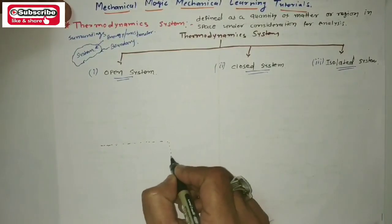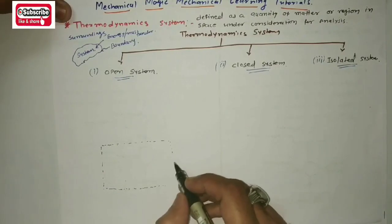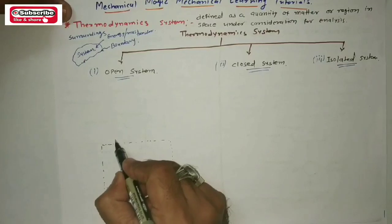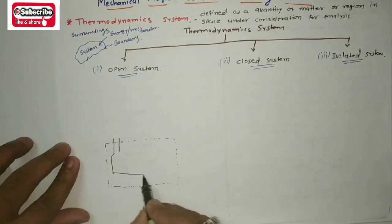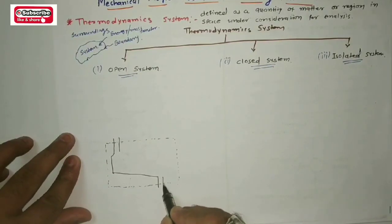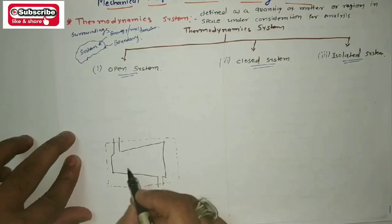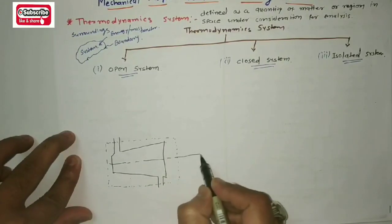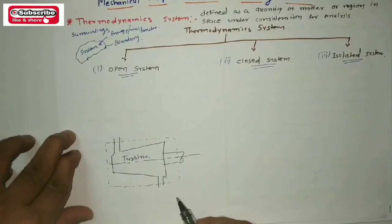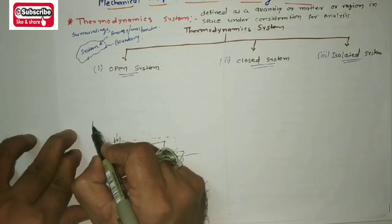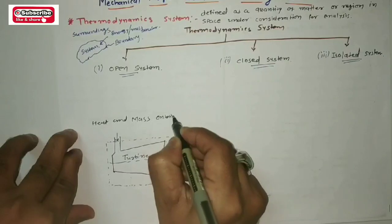In the case of an open system, one of the examples is a turbine. You can see this is a symbol of the turbine — you can write down 'turbine' over here.